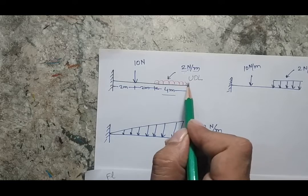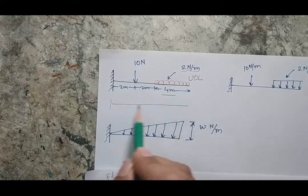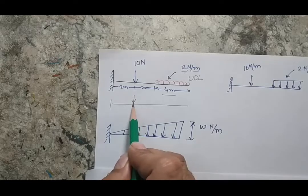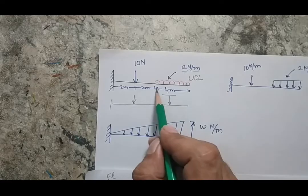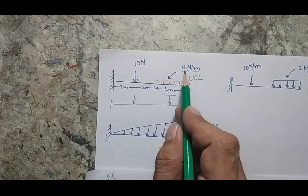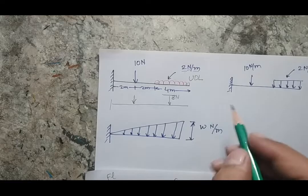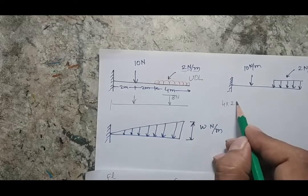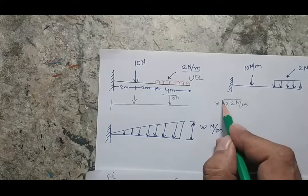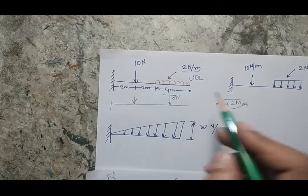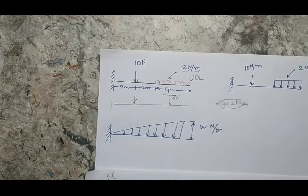For example, if the UDL is 2 newton per meter over a 4 meter length, the intensity is 2 N/m. If we want a single equivalent force, the total force will be 2 × 4 = 8 newton, acting at the center of that length. So the equivalent load is 8 newton, since newton per meter × meter gives newton.